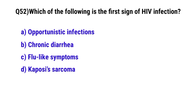Question number 52: Which of the following is the first sign of HIV infection? The correct option is C: flu-like symptoms.